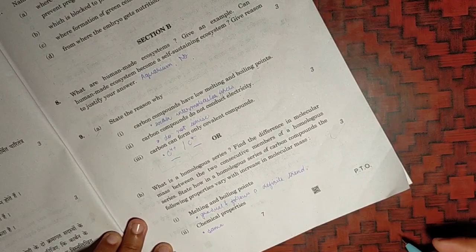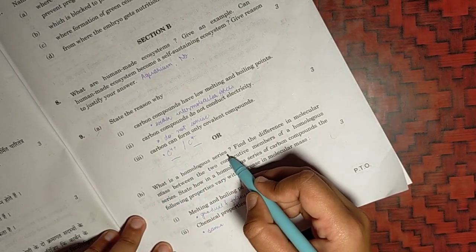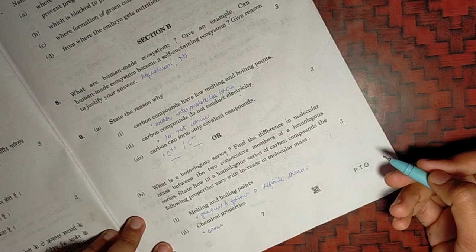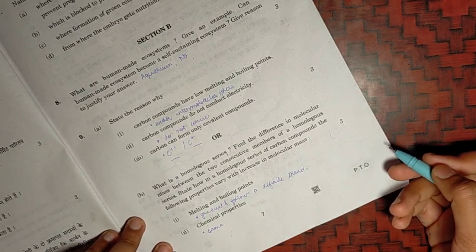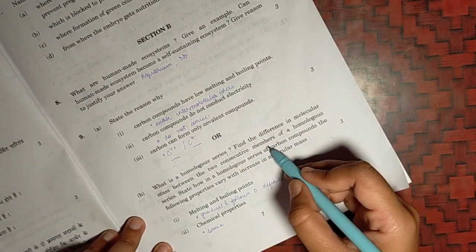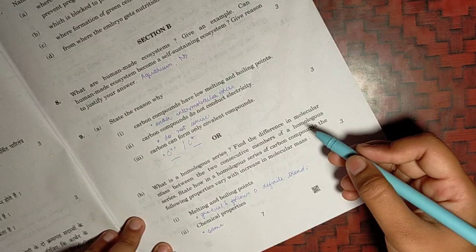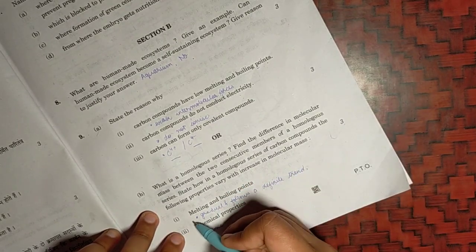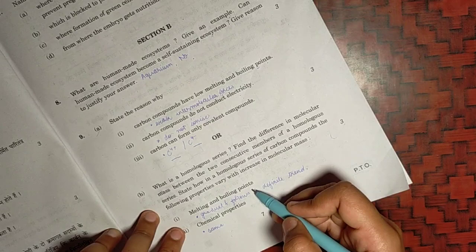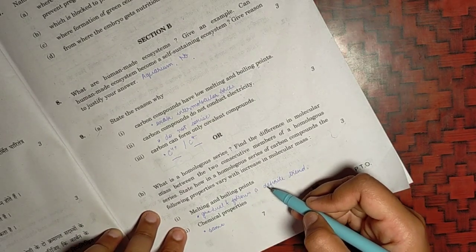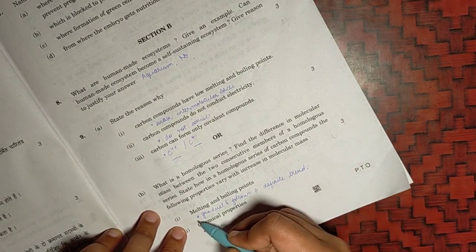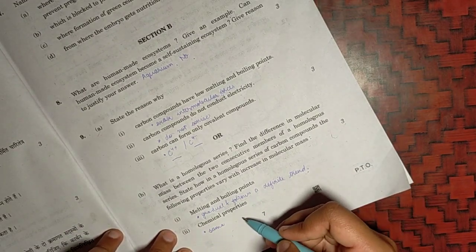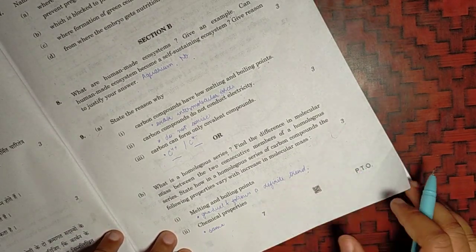For the B part of the ninth question, you need to tell what are homologous series. That is a group of series of carbon compounds which differ by CH2 and difference in molecular mass is of 14U or the atomic unit. How the carbon compounds vary. Melting point and boiling point, as the atomic mass increases gradually, so they will follow a definite trend and increase. Whereas the chemical properties are same as the functional group are same in a homologous series.